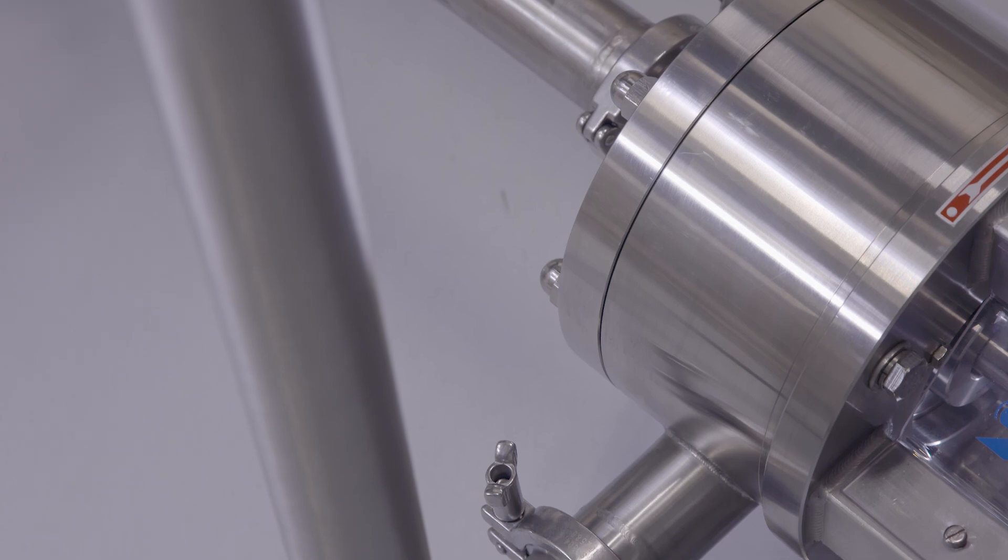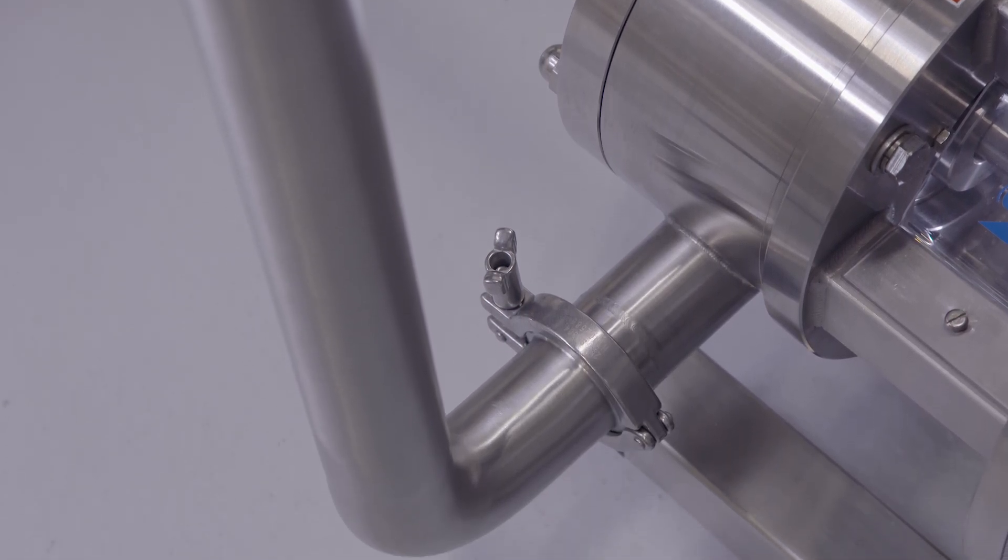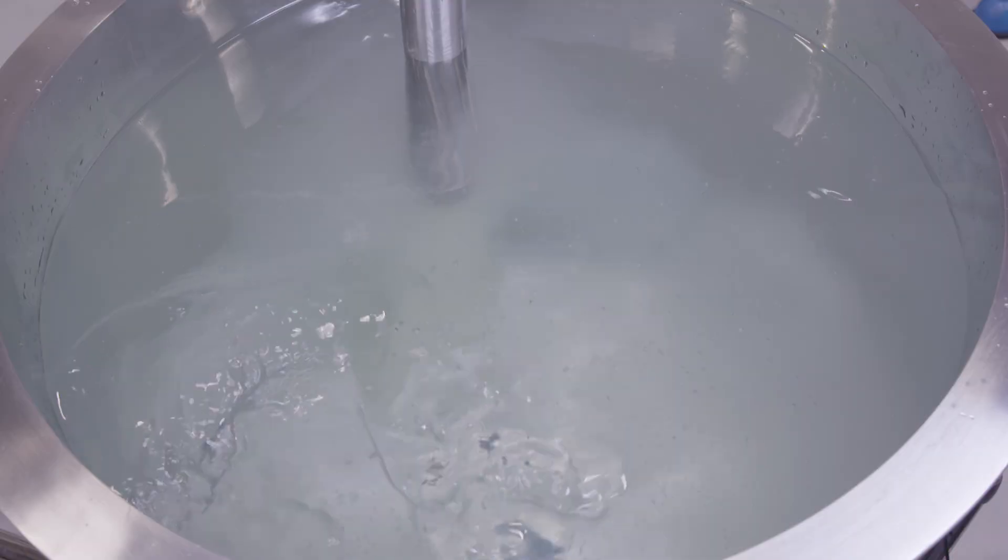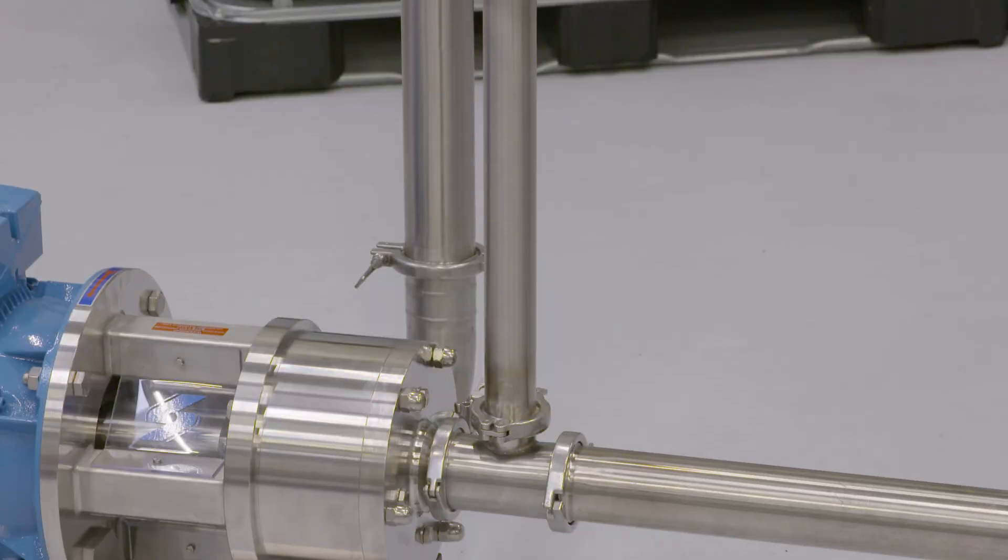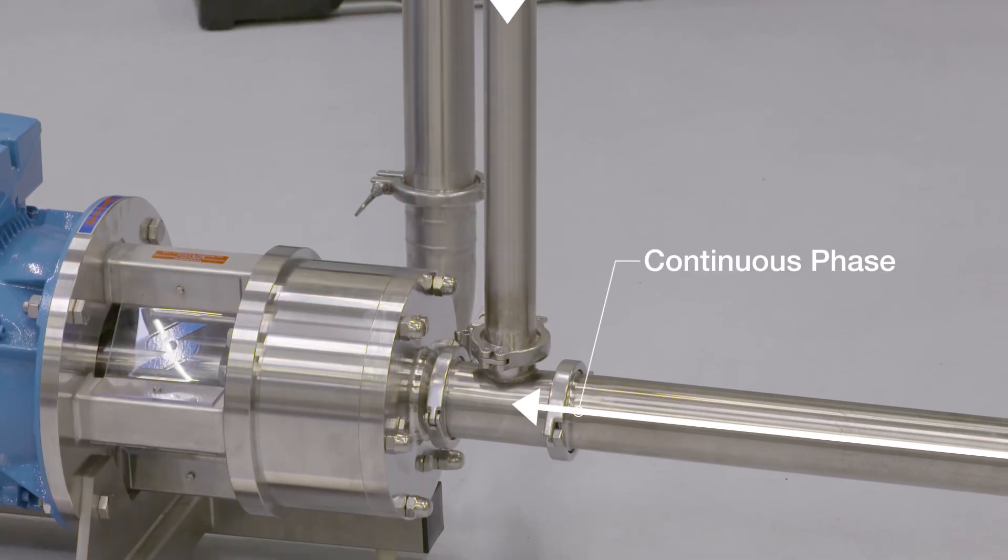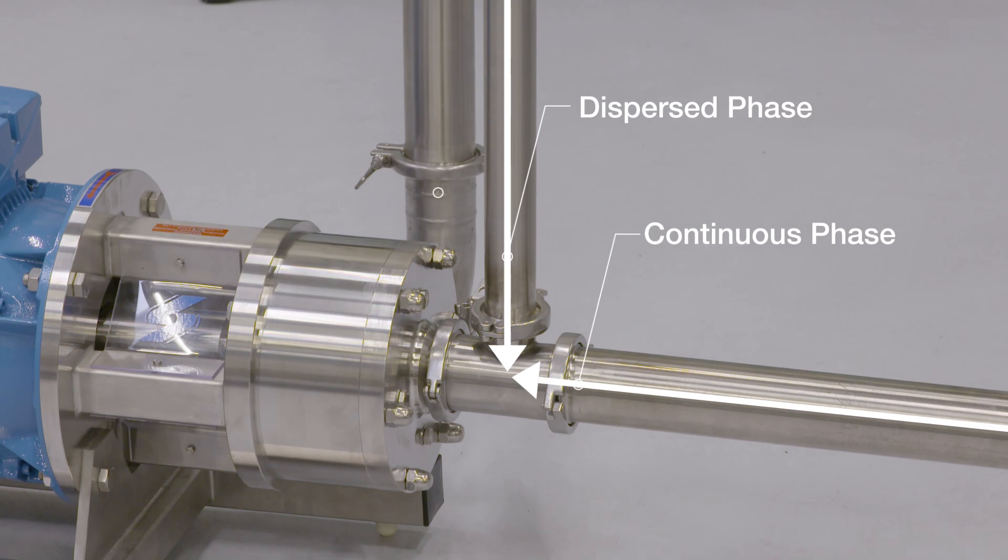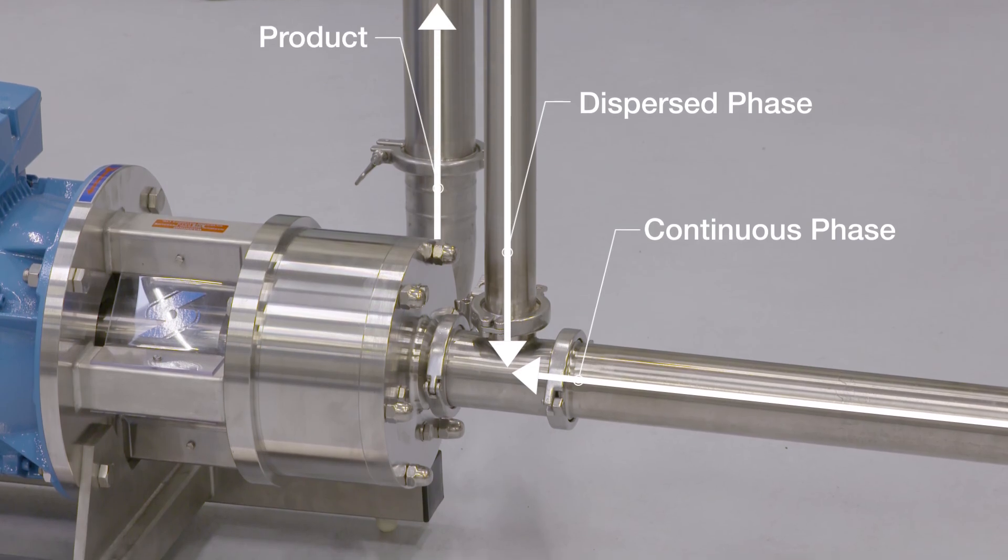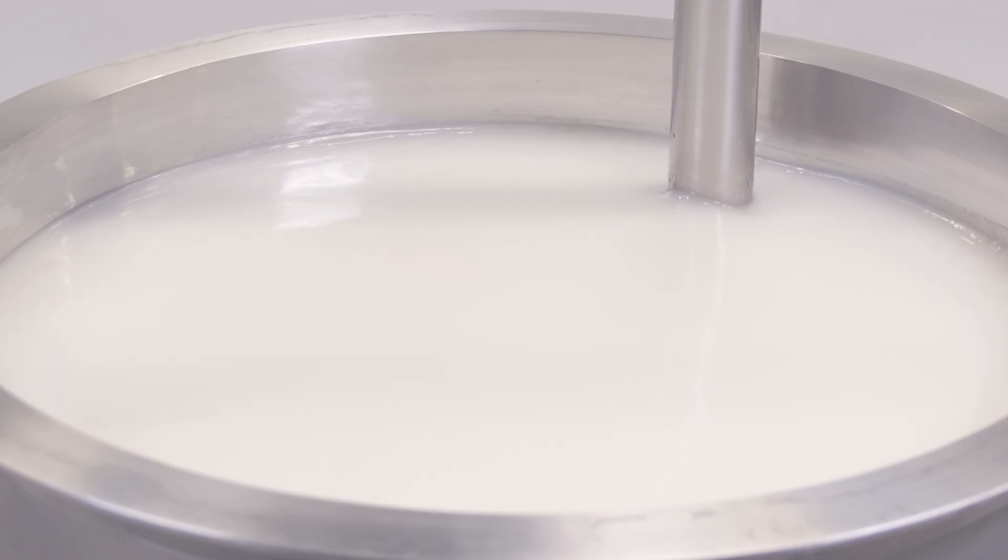When combining the two phases, the dispersed phase can be added into the vessel, but it is more efficient to introduce it to the liquid stream just prior to the in-line mixer's inlet. So they mix on contact in the high shear zone to produce an instantaneous emulsion.